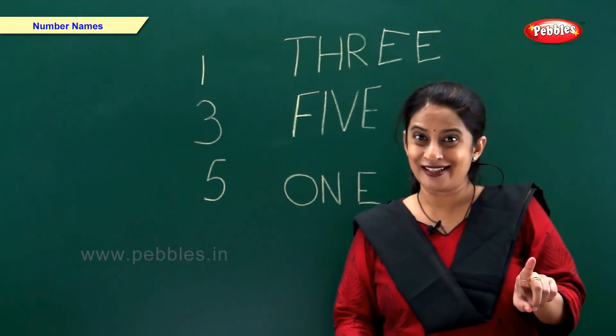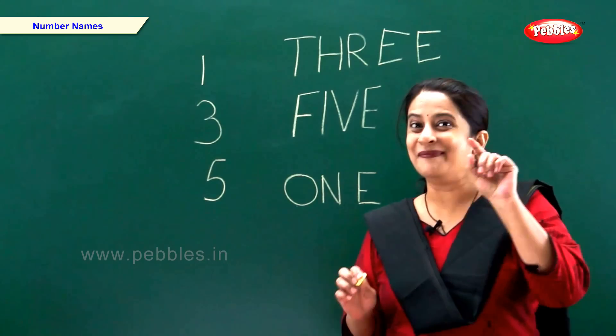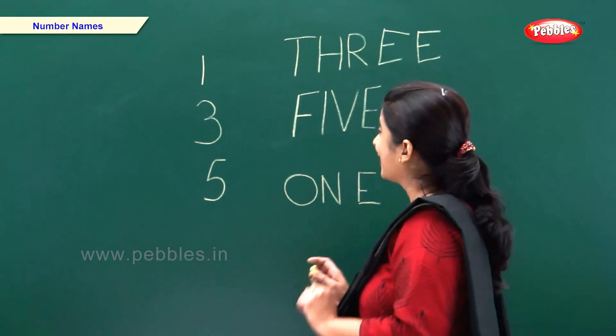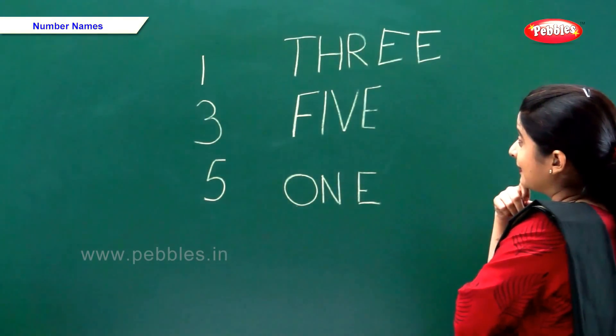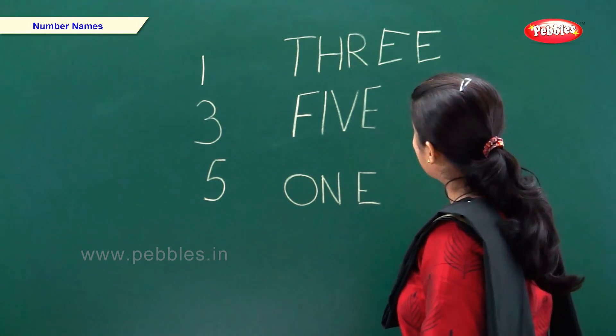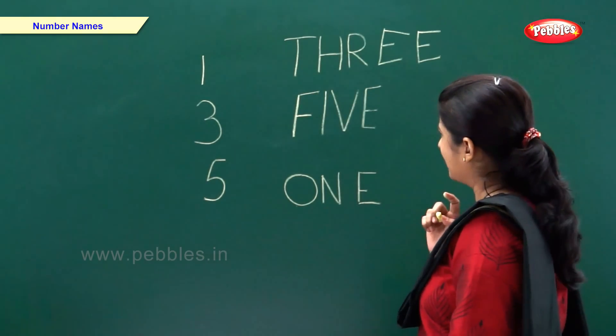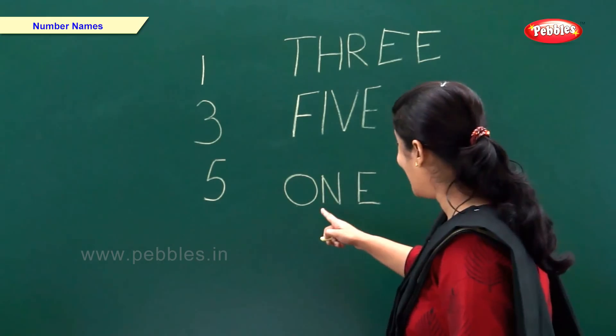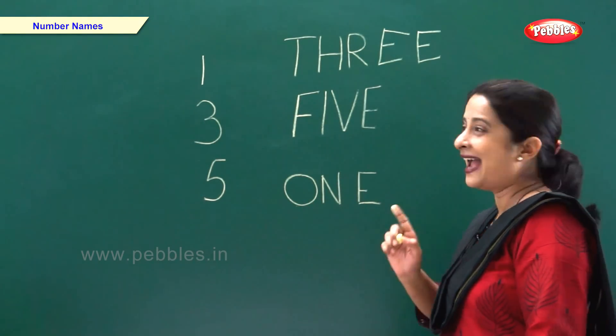As you can see, I have numbers on one side and number names on other side. So can you help me match them? Come on, let's do it. Number 1. So where is the number name? Is this a number name for number 1? No, this is THREE. So where is the number name? Oh, it's here. O N E. 1. So let's match.